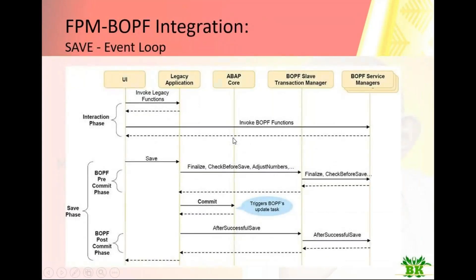From the save perspective, this is all standard SAP with no custom interference. There is a three-layer save: pre-commit, commit, and post-commit. In pre-commit, the framework validates whether any number needs to be created - for example, the freight order number is created if not already done. Then it commits, and in post-commit it checks whether the data is consistent between the database and buffer, ensuring consistency between the two.